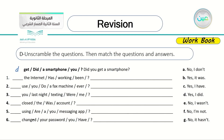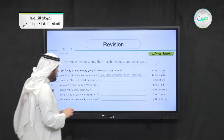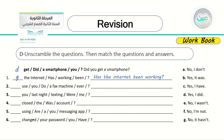Number one: 'The internet has working been' unscrambles to 'Has the internet been working?' — answer F: 'No, it hasn't.' Number two: 'use you do a fax machine ever' unscrambles to 'Do you ever use a fax machine?' — answer A: 'No, I don't.' Choose the same auxiliary verb for the answer.